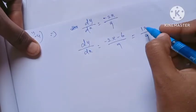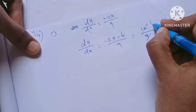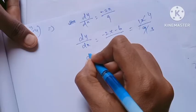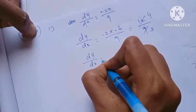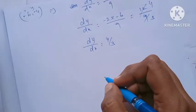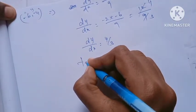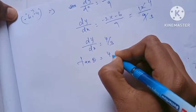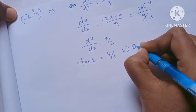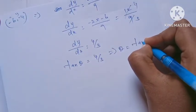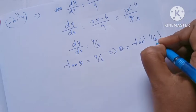Cancel: 12 divided by 9 is 4/3. So dy/dx = 4/3.